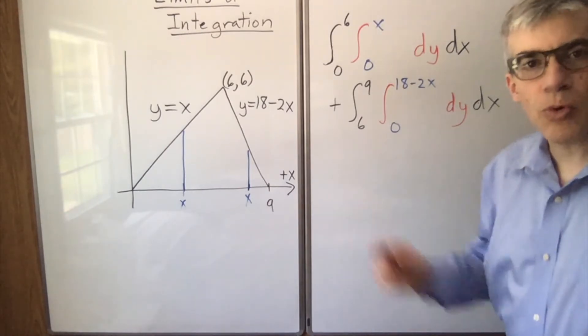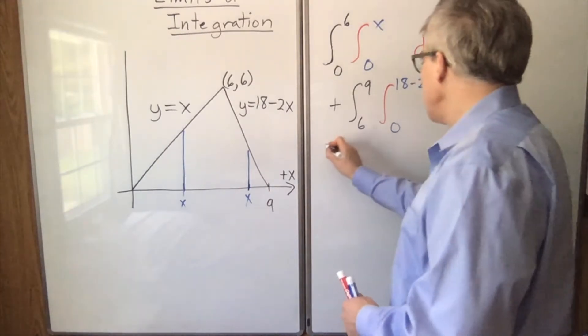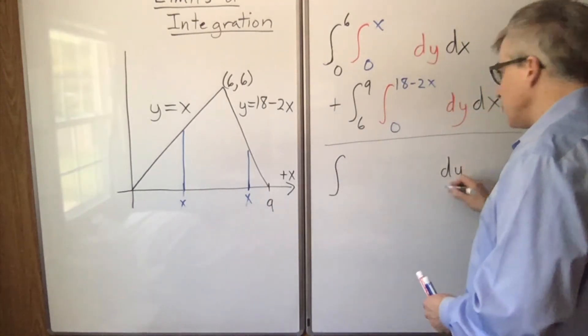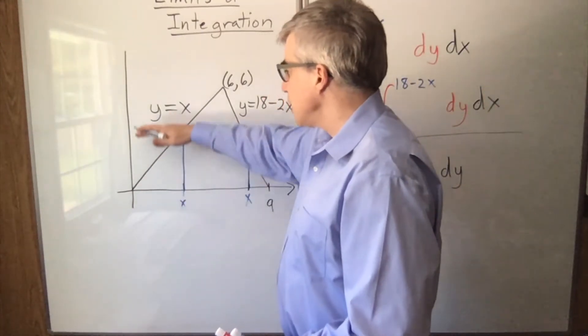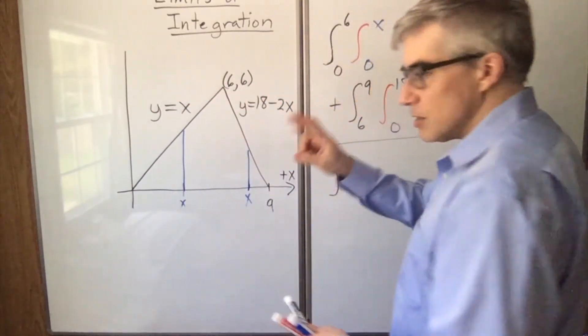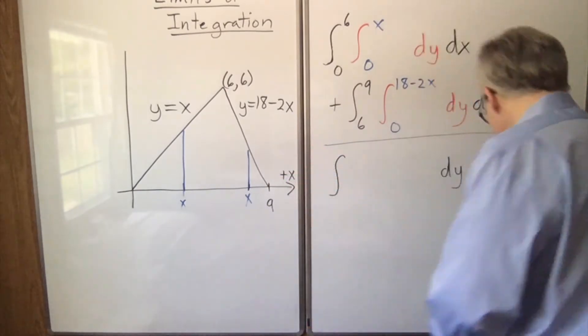What happens if we do it in the other order, though? If we integrate dy, we only have to do it once. Because over the entire range of y, the lower limit is this curve, and the upper limit is that curve. Lower and upper, meaning in value.